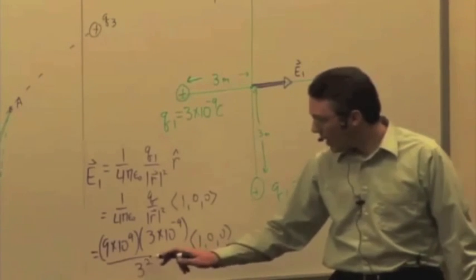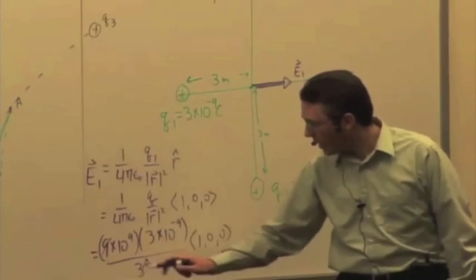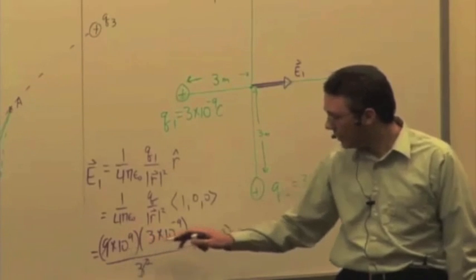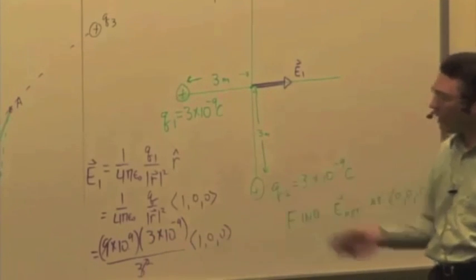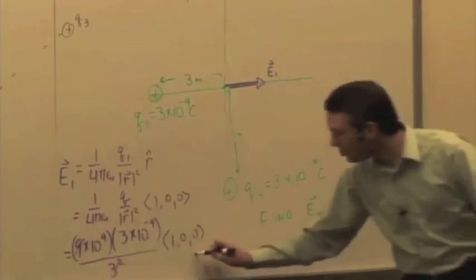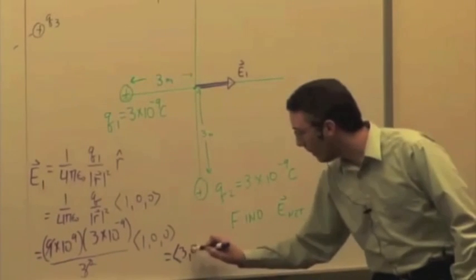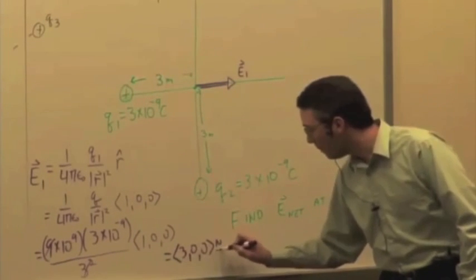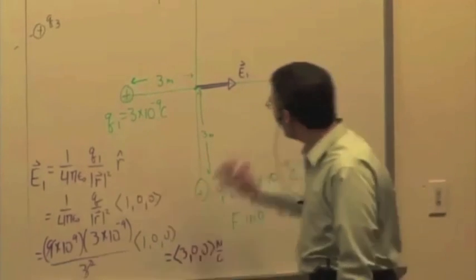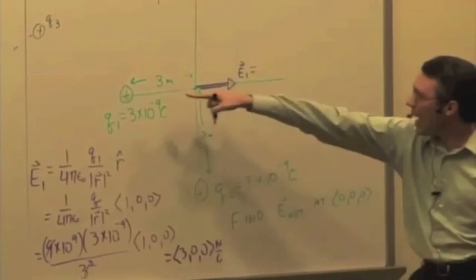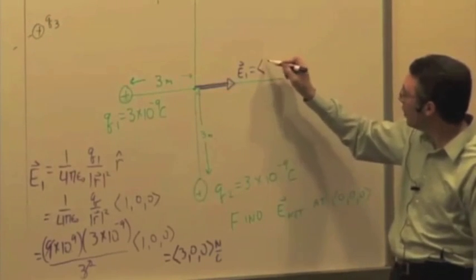3 squared is 9, so we have a 9 canceling the 9 down here. We have 10 to the 9th times 10 to the minus 9. We're going to get 3, 0, 0 newtons per coulomb, right? And that is E1. That's the electric field due to just that single point charge, Q1.